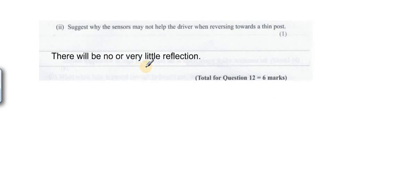Suggest why the sensors may not help the driver when reversing towards a thin post. Due to the thin post, there is a chance the incident pulse will not hit the post and will not reflect back. There will be no or very little reflection. Or I guess you can say that if the size of the post is equal to the wavelength of the pulse, there is a chance that the pulse gets diffracted.